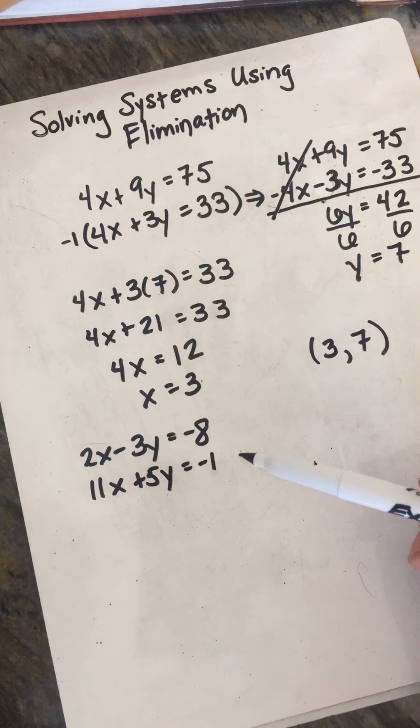So let's take a look at the y, I think that would be a little bit easier to work with. I don't really enjoy working with 11. So if I multiply the top equation by 5 and the bottom equation by 3, the y terms will subtract away. Multiplying this by 5 and this by 3, this becomes 10x minus 15y equals negative 40, and 33x plus 15y equals negative 3.